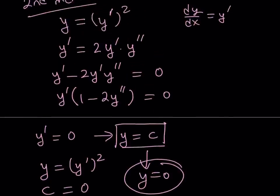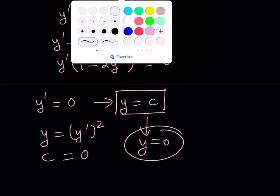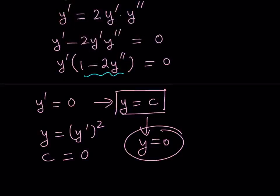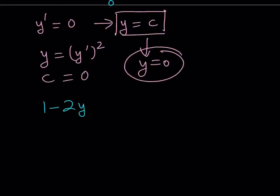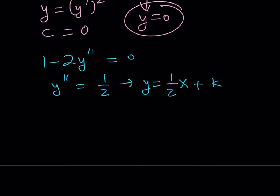That makes sense: if y equals zero it's constant, the derivative of zero is zero, and zero squared is zero, so zero equals zero. Now for the other solution, setting 1 minus 2y double prime equal to zero gives y double prime equals one half. So the second derivative is a constant. We can integrate: the derivative of what equals one half? The answer is one half times x, plus a constant k. So y prime equals one half x plus k.